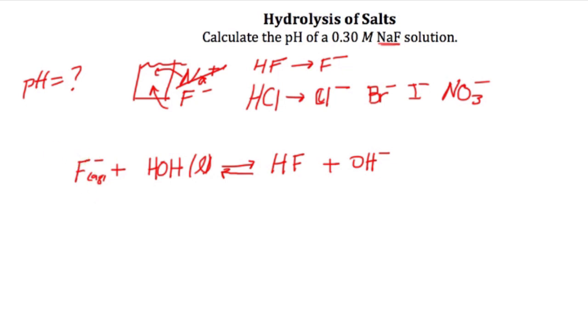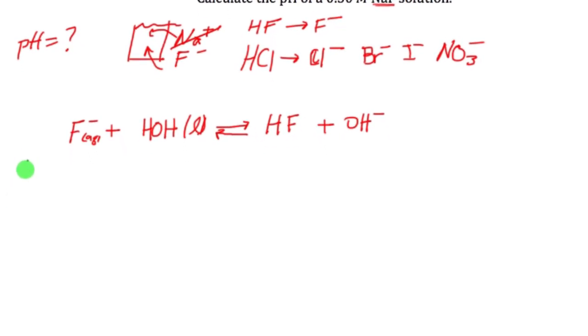So the next step here is to start looking at the calculation. Well, I know that I have initially put into this container 0.3 molar solution. Water we don't care about. This starts off as 0. This starts off as 0. My change is minus X, plus X over here, plus X over here, and of course, the equilibrium table. We're going to finish up with 0.30 molar minus X, and X, and X over here. So this is my setup for the ice table.